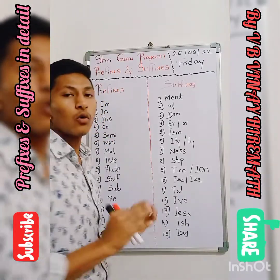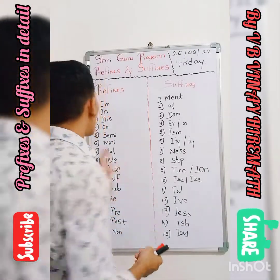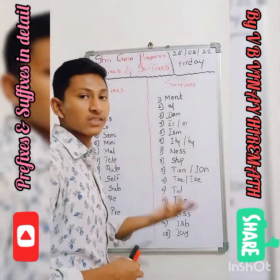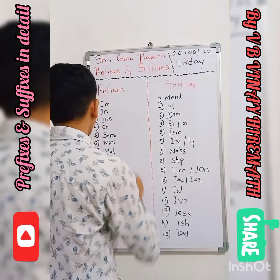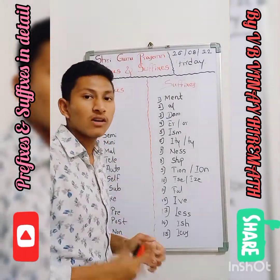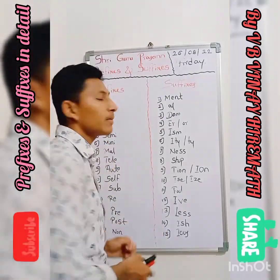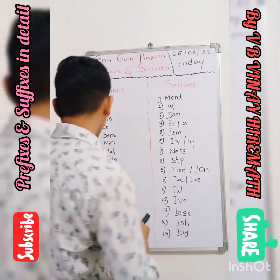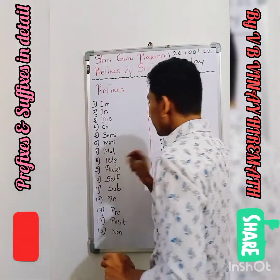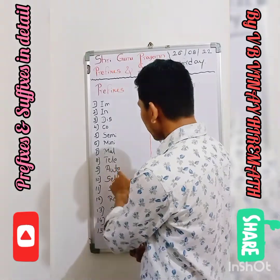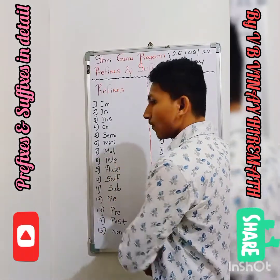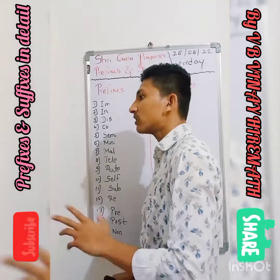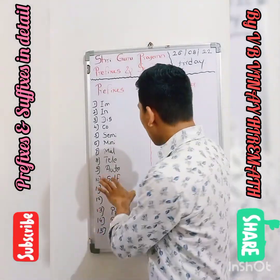The prefix 'Co-': co-relate, co-operate, co-operation, co-curriculum, co-extra activities. The prefix 'Semi-': semi-colon, semi-English. The prefix 'Mini-': mini-bus, mini-car. The prefix 'Multi-': multi-practice, multi-nutrition. The prefix 'Tele-': telecast, telephone, television. The prefix 'Auto-': auto-rickshaw, auto-mobile, auto-matic.